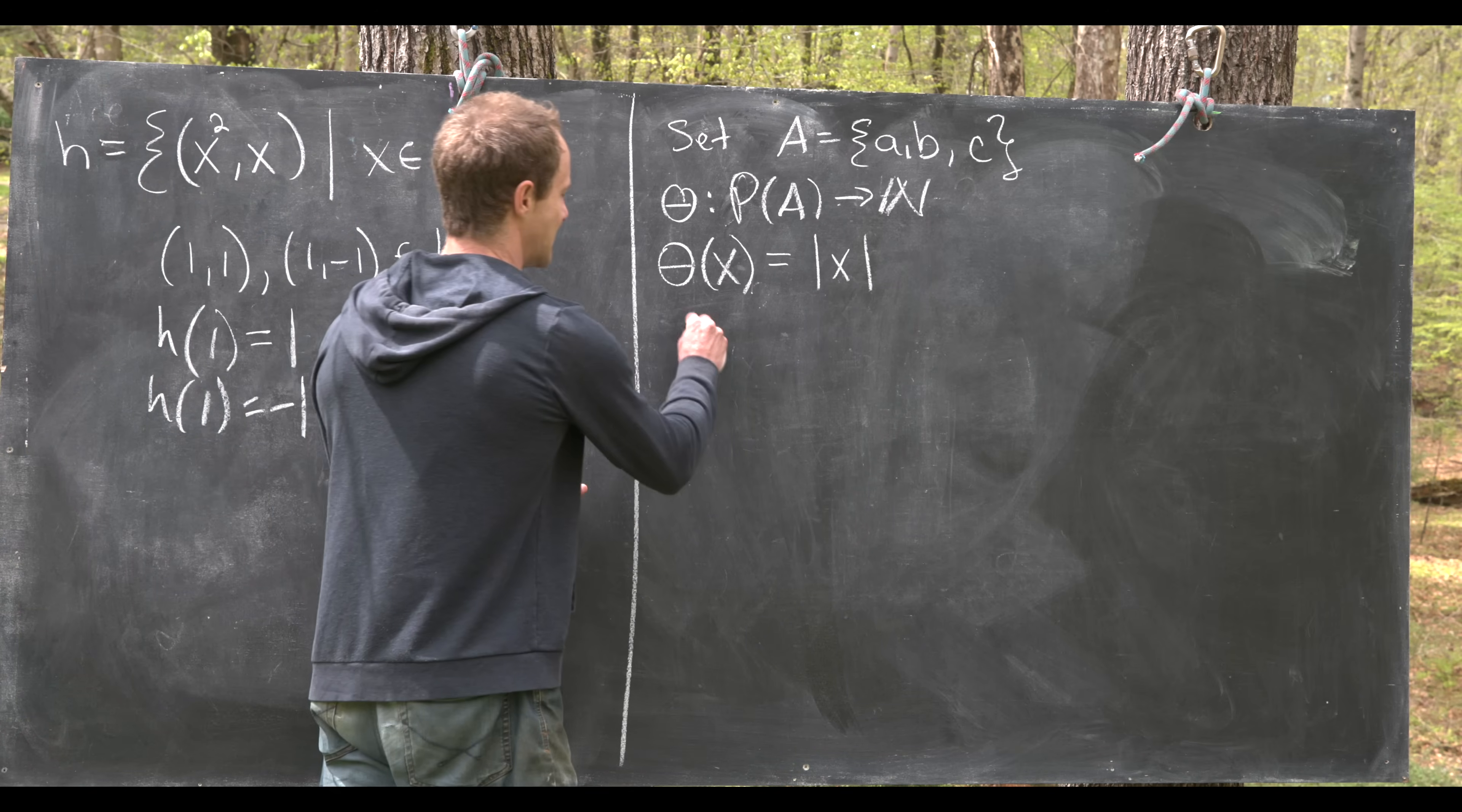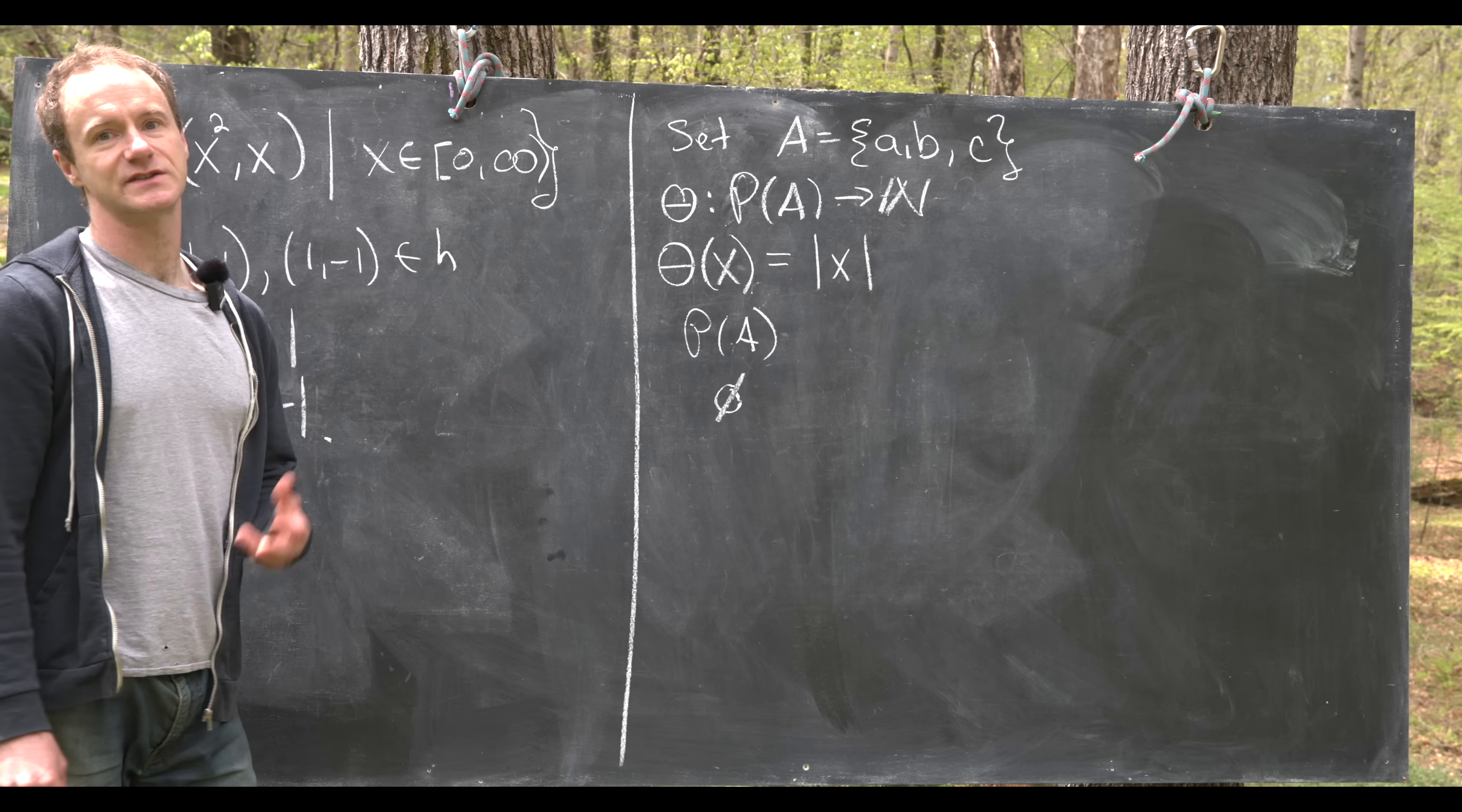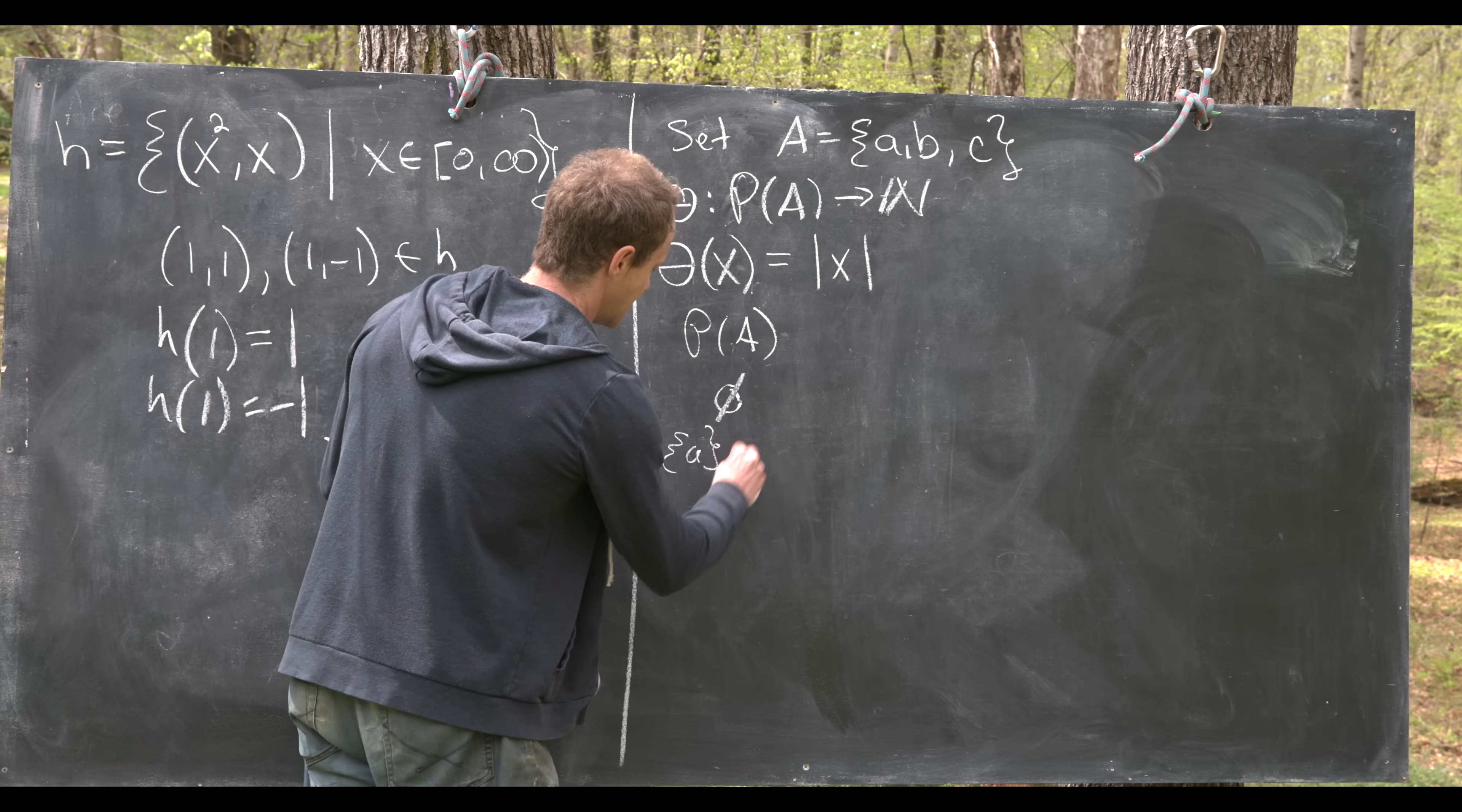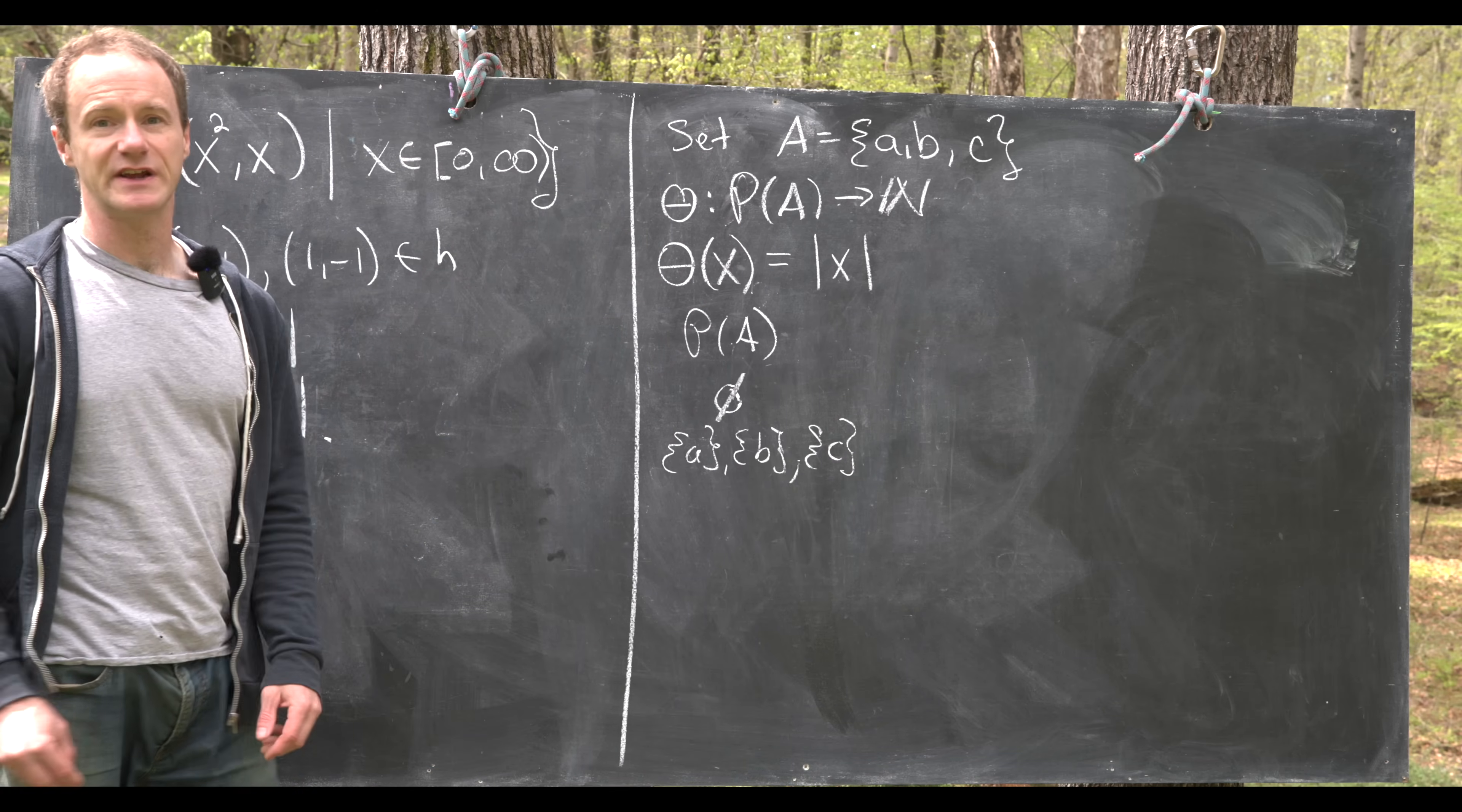So we could make a picture of the power set of A. Notice that's going to have eight elements given that A has three elements. So it's going to have 2³ elements. So we've got the empty set. We have the singletons {a}, {b}, and the singleton {c}.